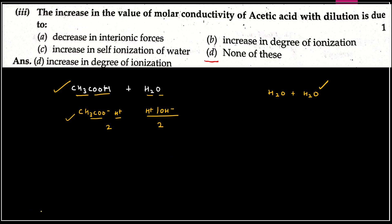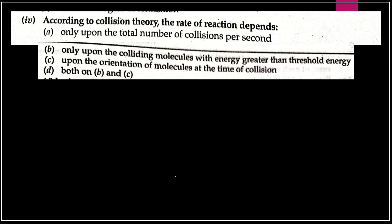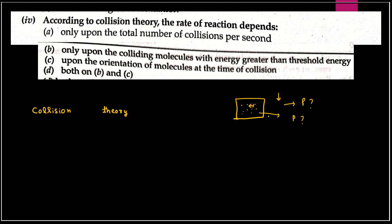Question number four: according to collision theory — what is collision theory? Collision theory kehti hai: maano aapke paas reactants ke molecules hain. Jitni zyada collisions hongi, utna zyada product form hoga. For example, N2 molecule aur H2 molecule jitna collide karenge, utna NH3 ki formation hogi. The number of reactants participating in collisions decides the formation of product — more collisions, more product; lesser collisions, lesser product.